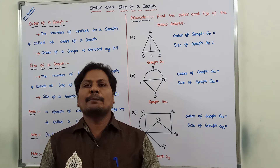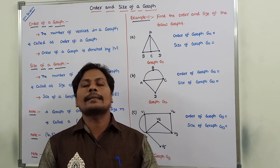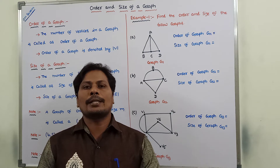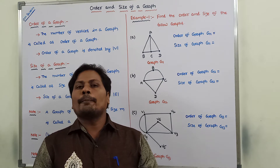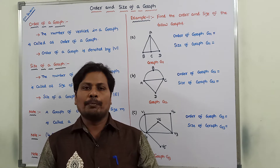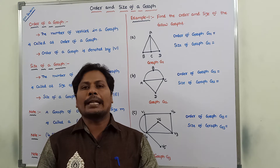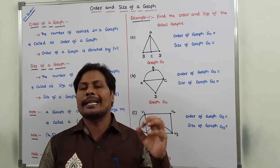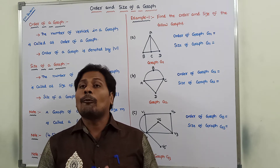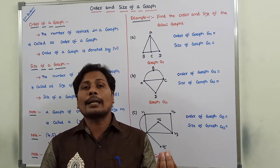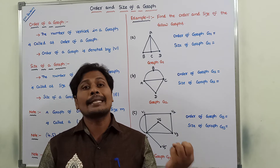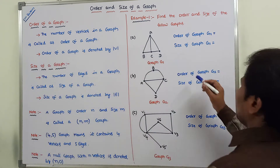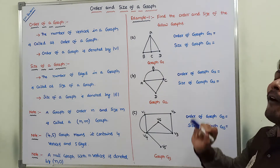Hi friends, today I am giving a lecture on order and the size of a graph. It is one of the most important concepts from a competitive examination point of view and also from an external examination point of view. First of all, what is order of a graph? Order of a graph means the number of vertices in a given graph. Size of a graph means the number of edges present in the given graph.